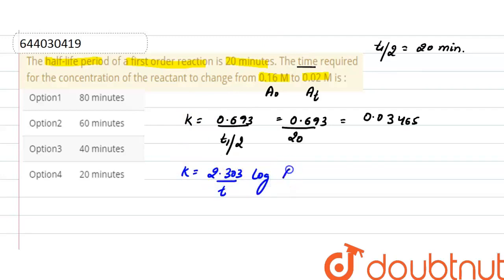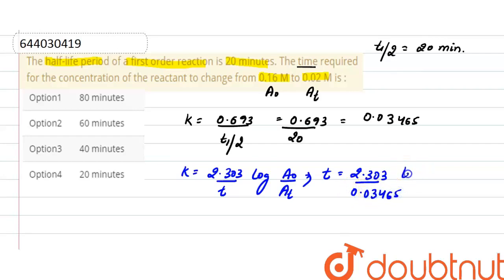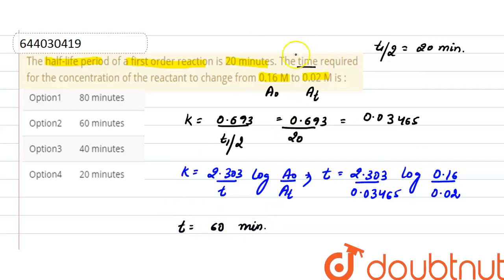The relation between rate constant and time for a first order reaction is: t equals 2.303 divided by k, multiplied by log of initial concentration upon concentration at time t. Substituting the values: t equals 2.303 divided by 0.03465, multiplied by log of 0.16 divided by 0.02. After solving, the time required is 60 minutes, so the correct option is option 2.